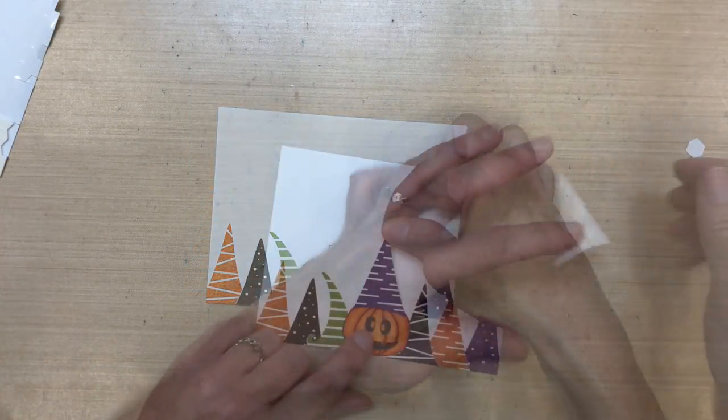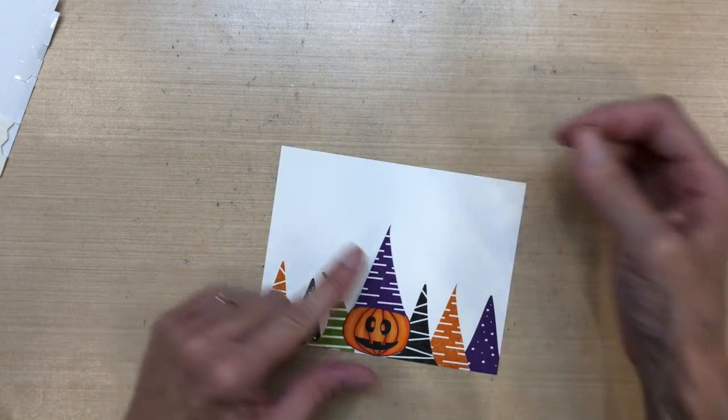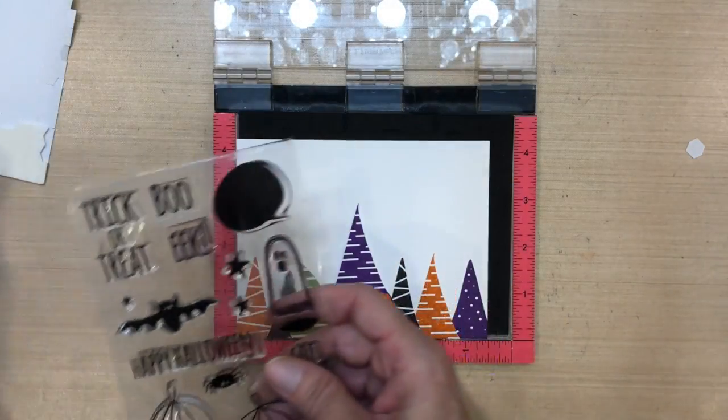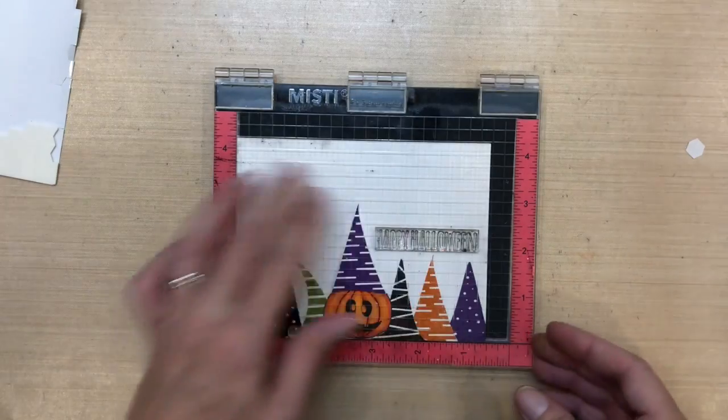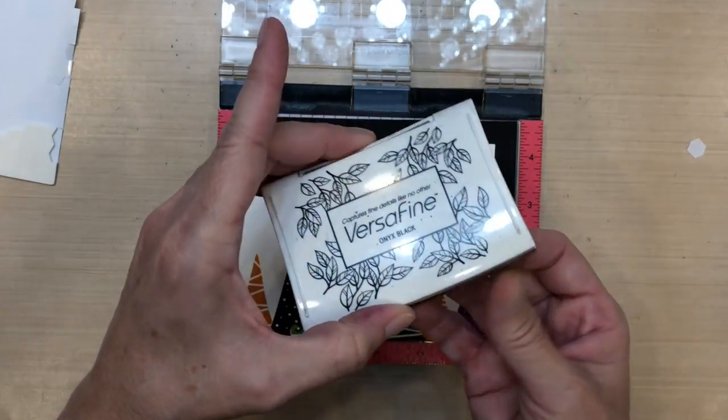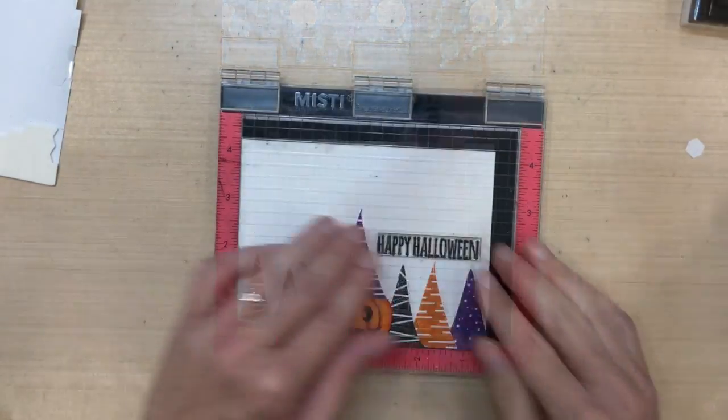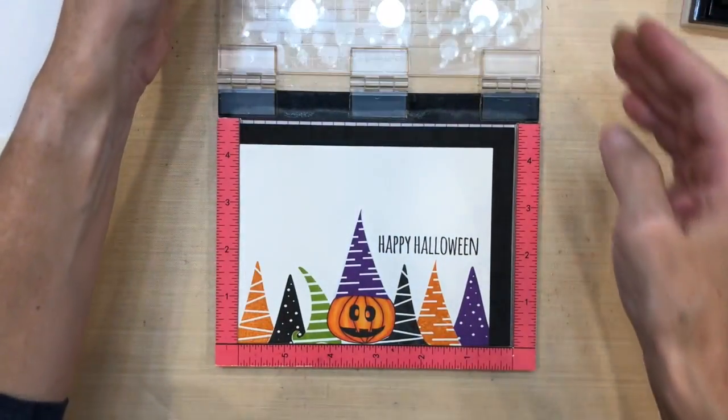I put some Stampin' Up Dimensionals on the hat and placed it on top. And now for the sentiment, I got it from the Got Candy set. It's just Happy Halloween. I placed it right above those witch hats on the right and stamped it in VersaFine Black Onyx ink. And then I trimmed the white off the top so that it was three and a quarter inches high.